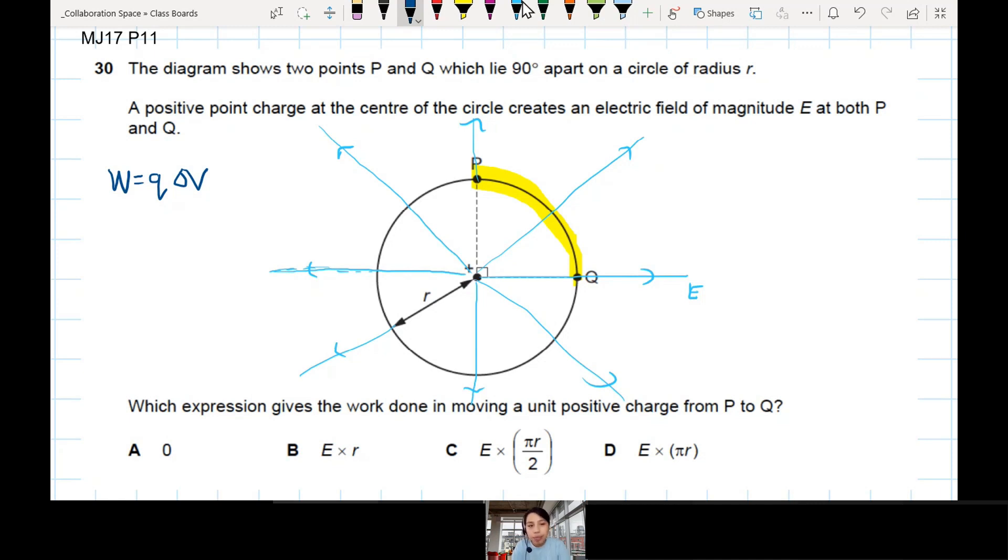Actually, the change in potential here is zero. So everything is zero. So this one is zero. Hang on a second. How do we know it's zero?